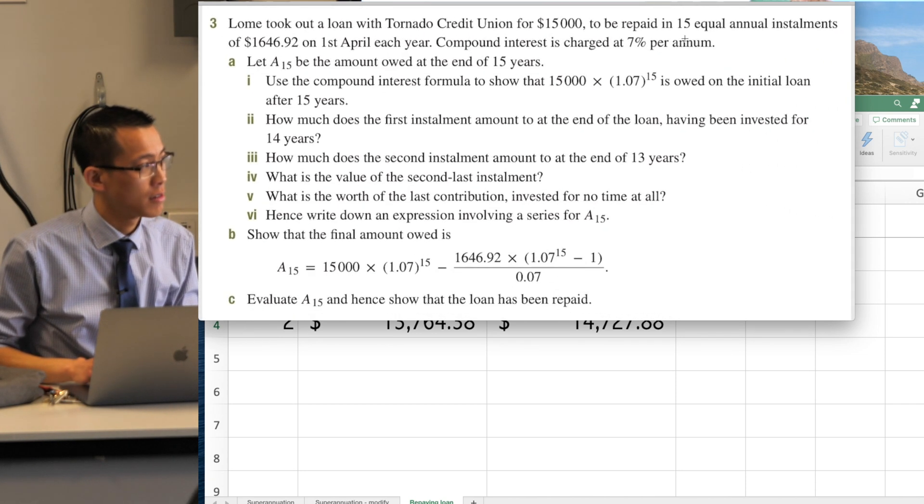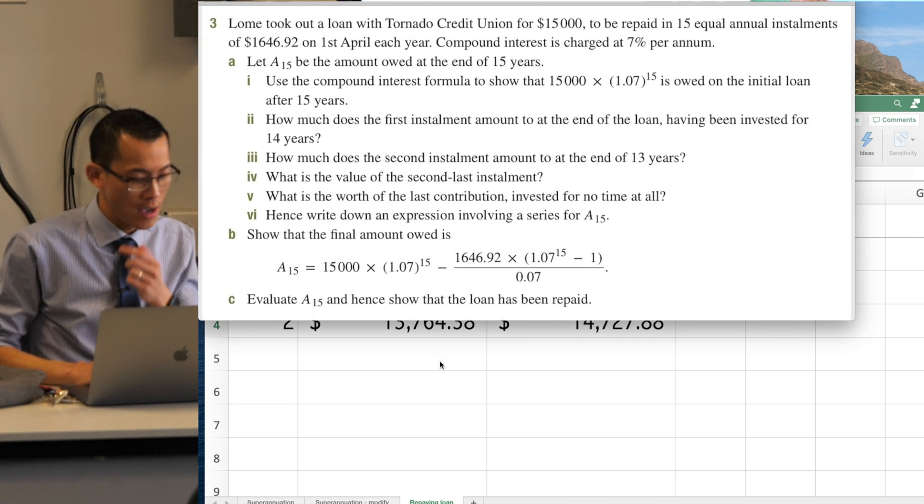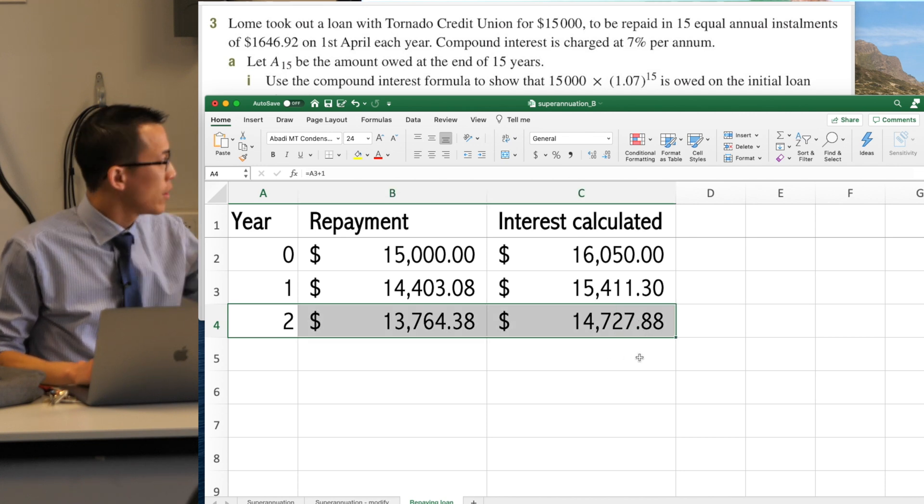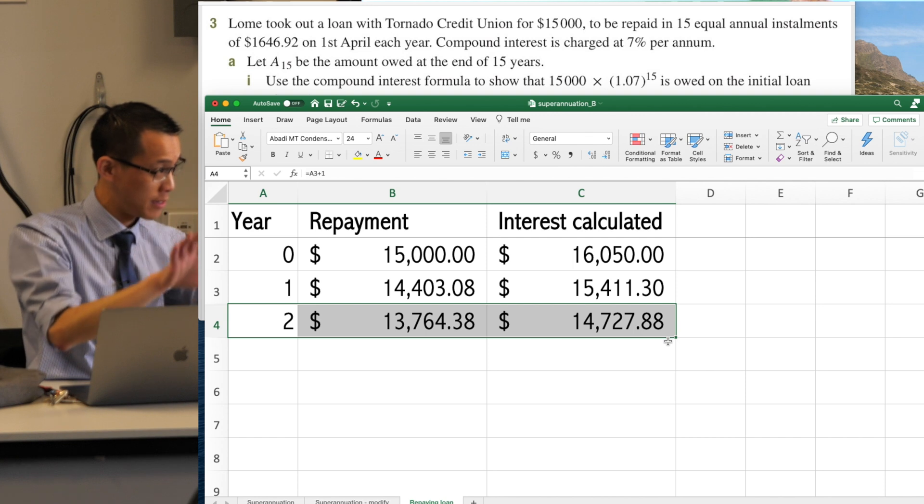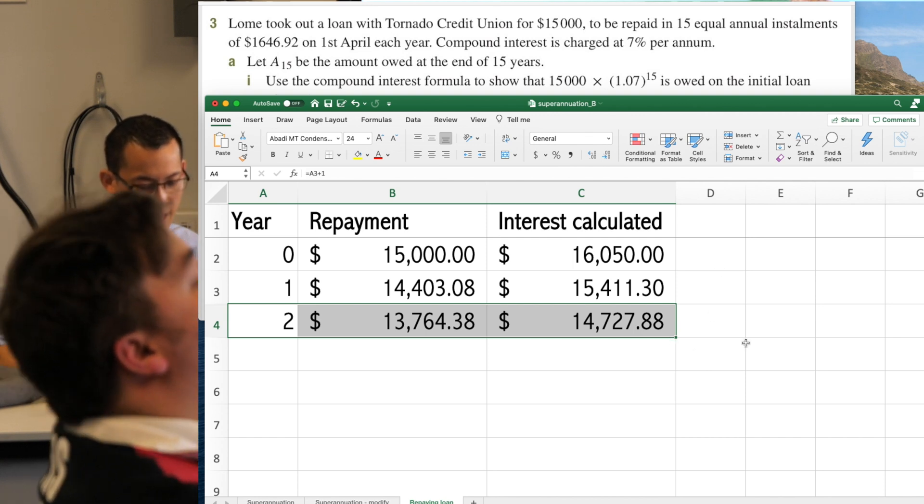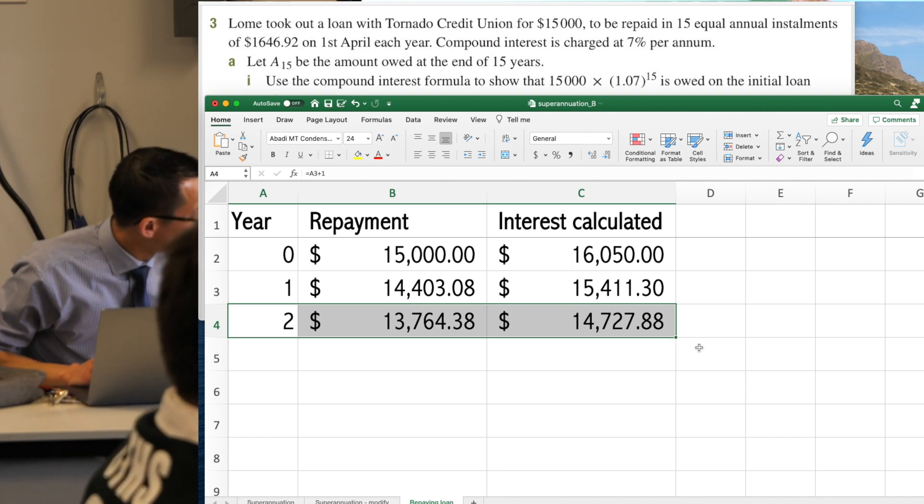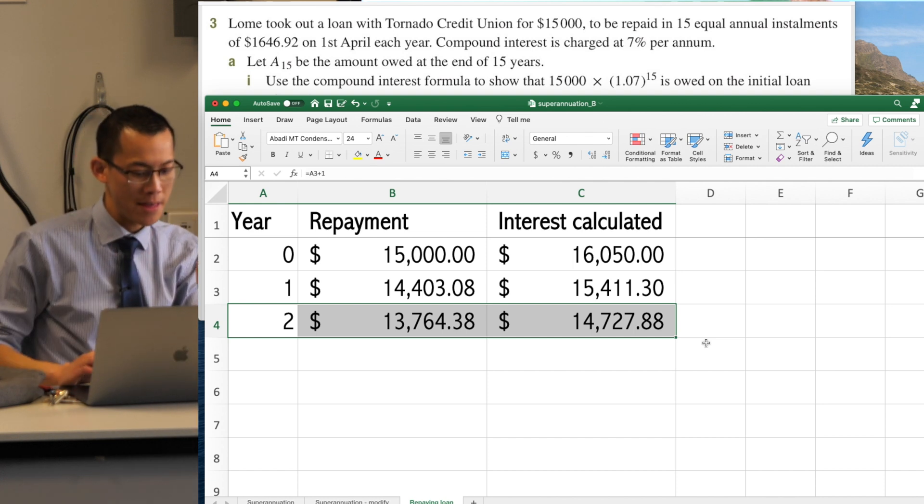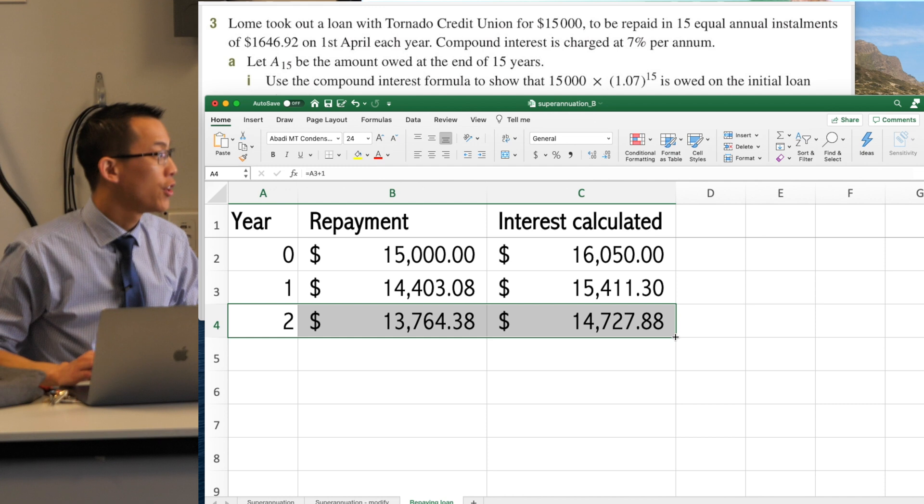Now what's great is, the question itself tells us how long this is supposed to go for. How many years do I do this? 15 years. So what I'm going to do is I'm going to, and if you didn't know this before, when you highlight these cells that you want to copy and paste down,